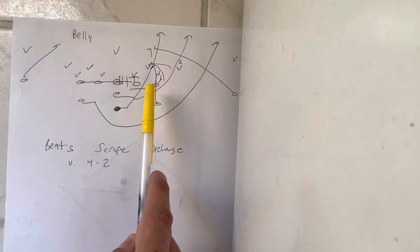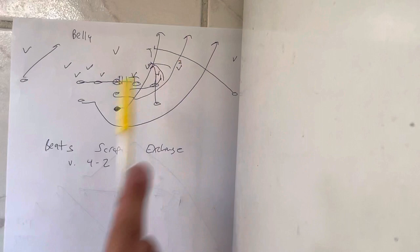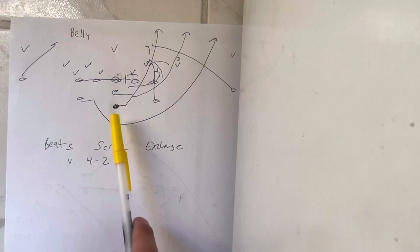The A-back leads through, and then there's no Mike there because he's taking the quarterback. He'll continue on to the safety. The quarterback reverses out, hands the ball to the B-back because there's nobody there. That's the whole reason why you run the Belly.